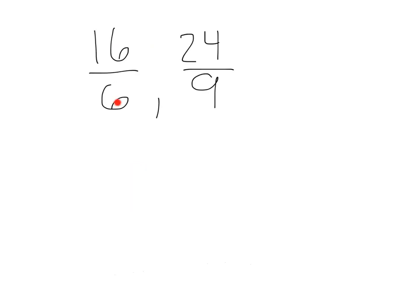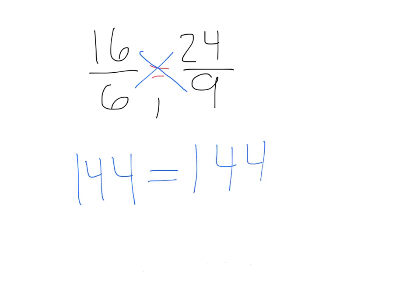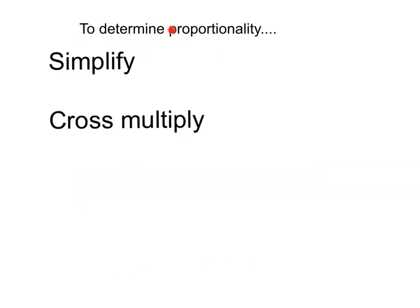Let's try 16/6 and 24/9. Again, let's set these equal to each other and cross-multiply. That'll give us 16 times 9, which is 144, equals 6 times 24, which is also 144. We have a proportion. So to determine if two ratios form a proportion, we've got two methods: we can simplify each one and see if they're equal, or we can cross-multiply and see if they're equal. Either one is going to give you the same result.